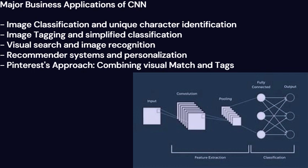Image Tagging and Simplified Classification. Image tagging is a crucial aspect of image classification, where an image is associated with descriptive keywords or phrases that make it easier to locate.